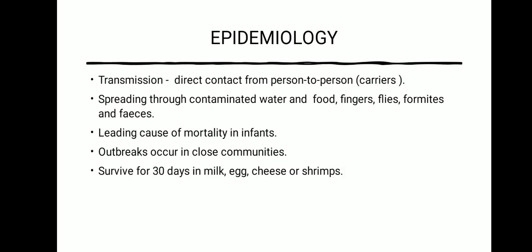Next, we will see the epidemiology — that is, how the infection can spread. Transmission may be direct contact from person to person; the person harboring this bacteria in the body is said to be a carrier, and through the carrier it spreads from one to another. Spreading also occurs through contaminated water and food, fingers, flies, fomites — non-living objects — and fecal material, which may also serve as sources.